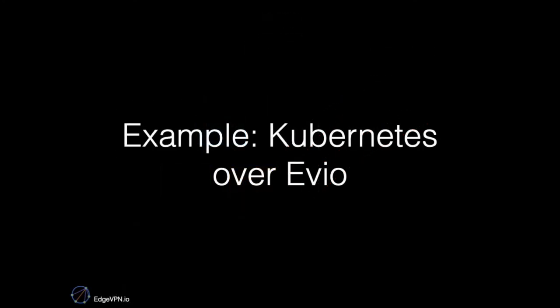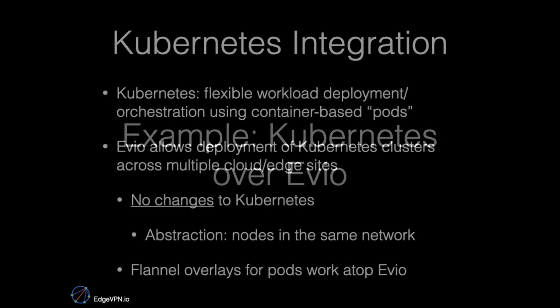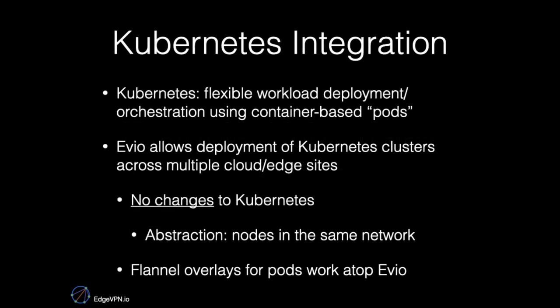Putting this all together — using EVO for Kubernetes deployment across edge nodes. Kubernetes is a framework for flexible workload deployment and orchestration using container-based pods. EVO allows Kubernetes to work unmodified on clusters spanning multiple clouds and edge sites.